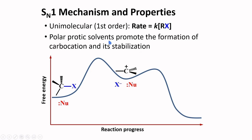Polar protic solvents promote the formation of carbocation and its stabilization. Polar protic solvents are capable of stabilizing the carbocation and the anion produced in the bond-breaking process. This stabilization lowers the energy of this intermediate, and by Hammond's postulate, could also lower the energy of the transition state.